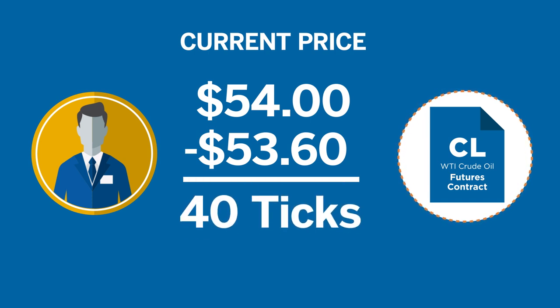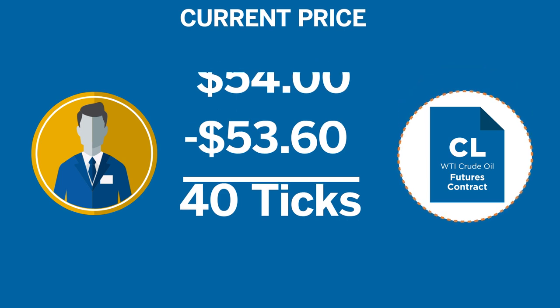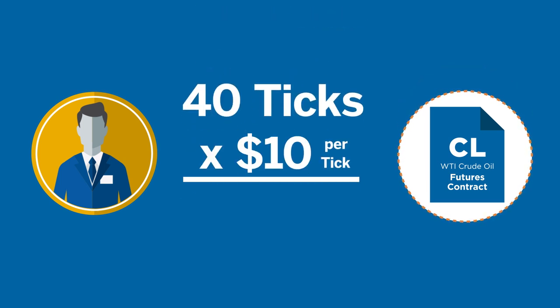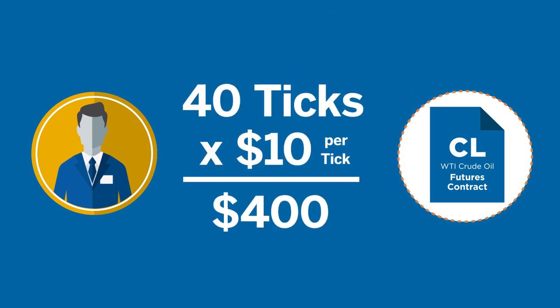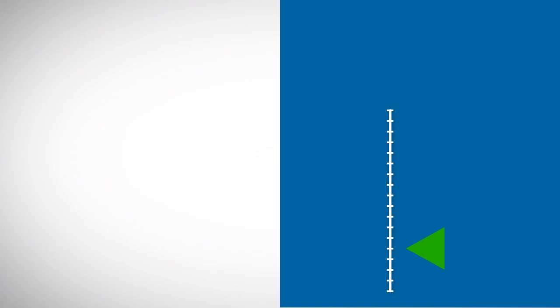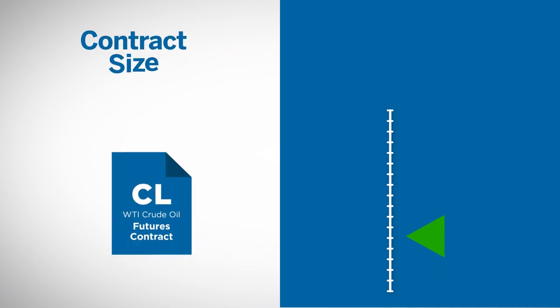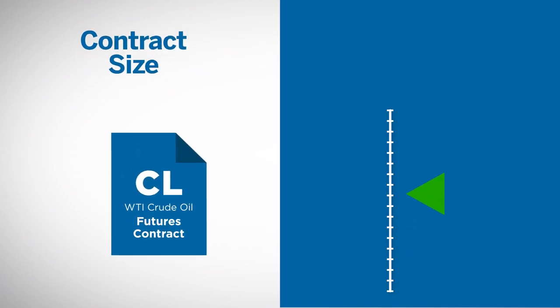A one-tick move is equal to $10, so a gain of 40 ticks would equal a profit of $400. Losses are calculated in exactly the same manner as gains. The size of the contract can have a considerable multiplying effect on a trader's profit or loss.